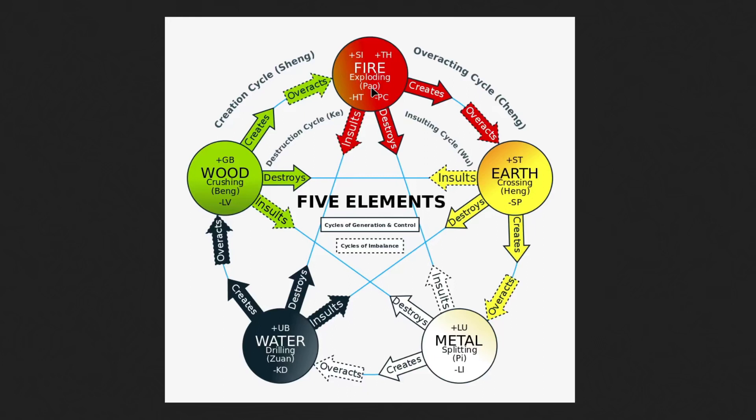We have water being the bladder, which is the hollow, and the kidneys being the solid. For wood we have the liver being the solid, the functional, the producer—think bile, which is then stored in the gallbladder, which is the supporter of the liver, the hollow organ.